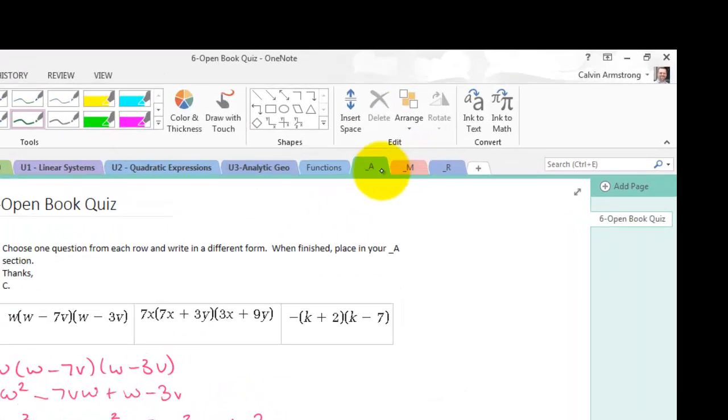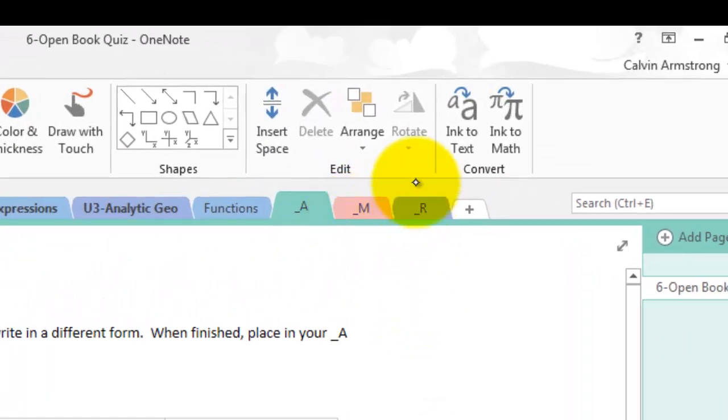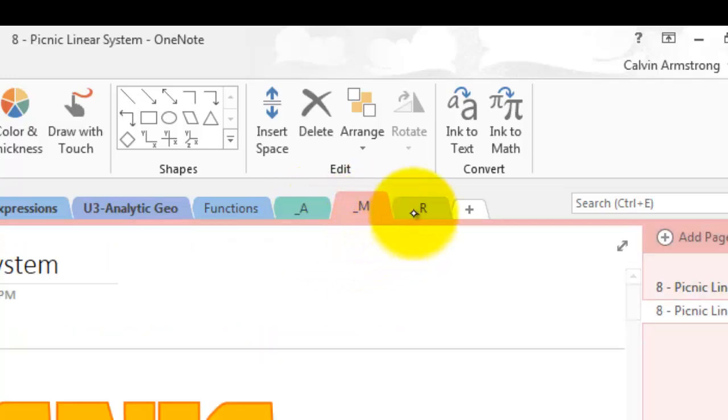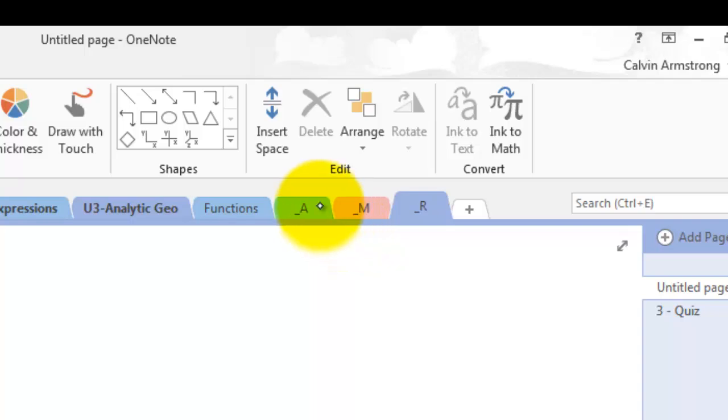There are three sections that are automatically input into every student notebook. We've got A, which is the assignment drop box, M, the marking section, and R, the return section.